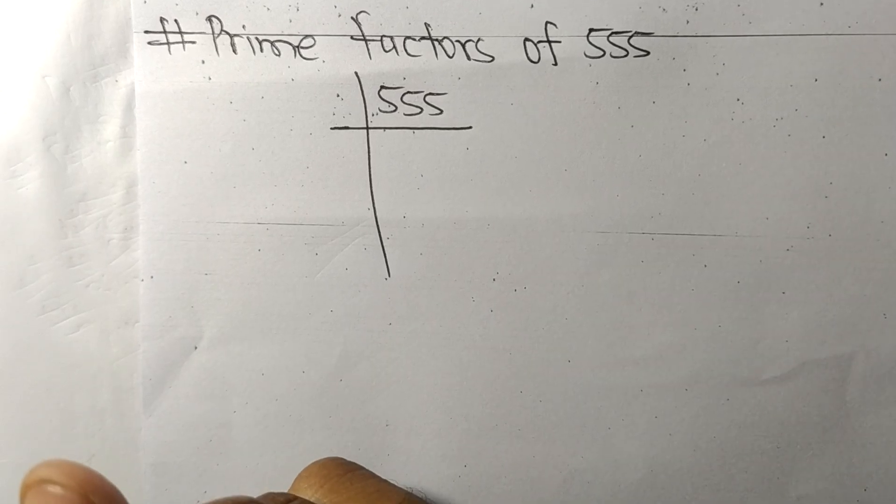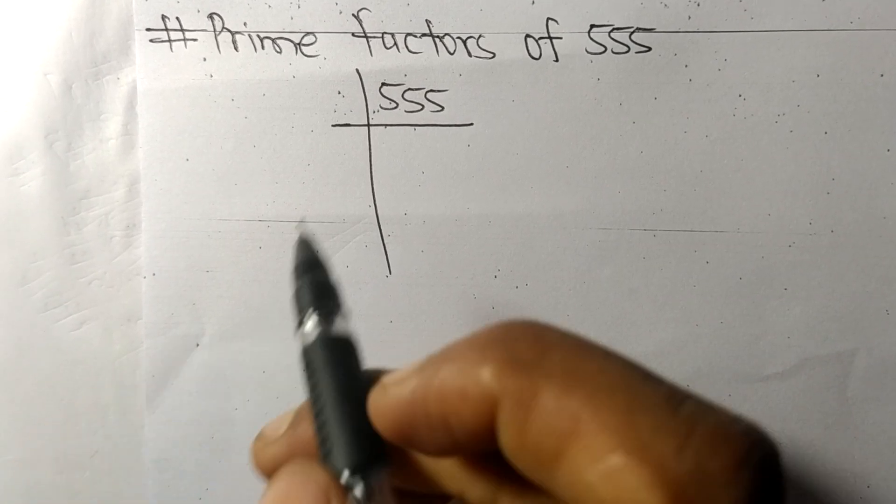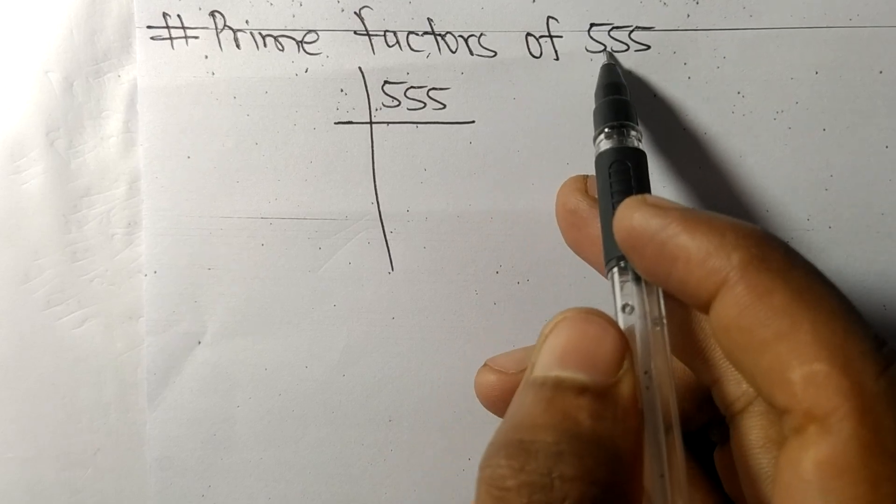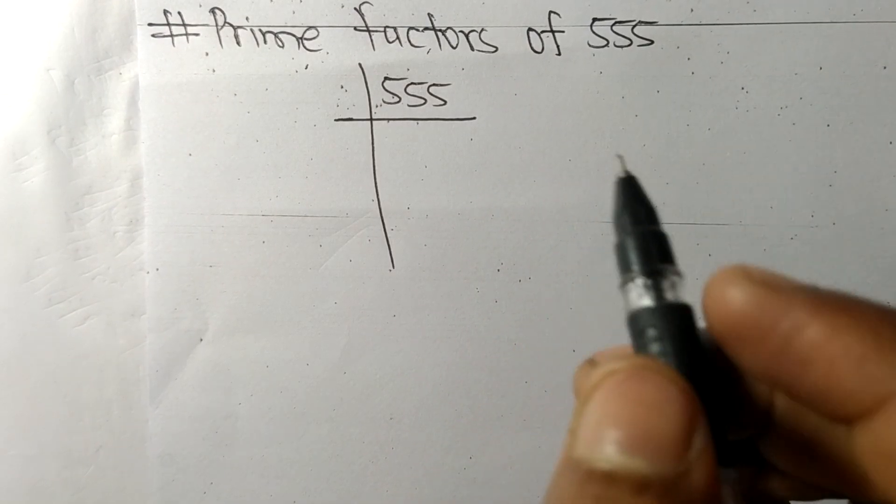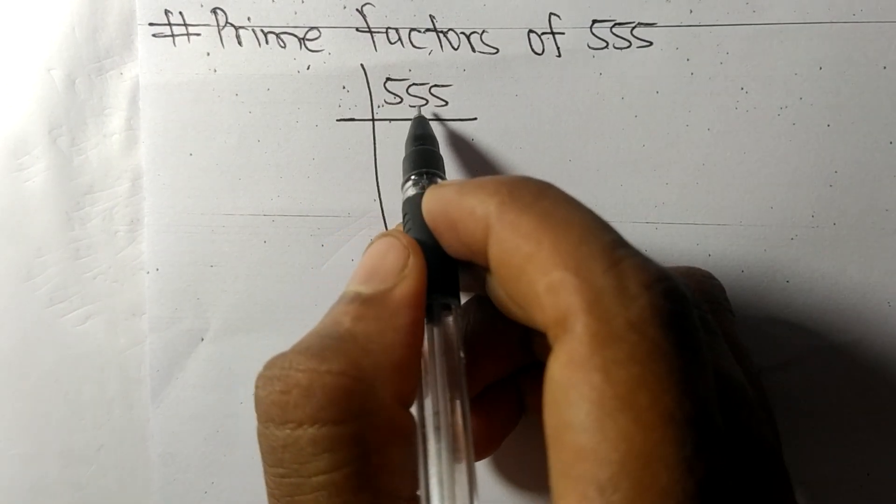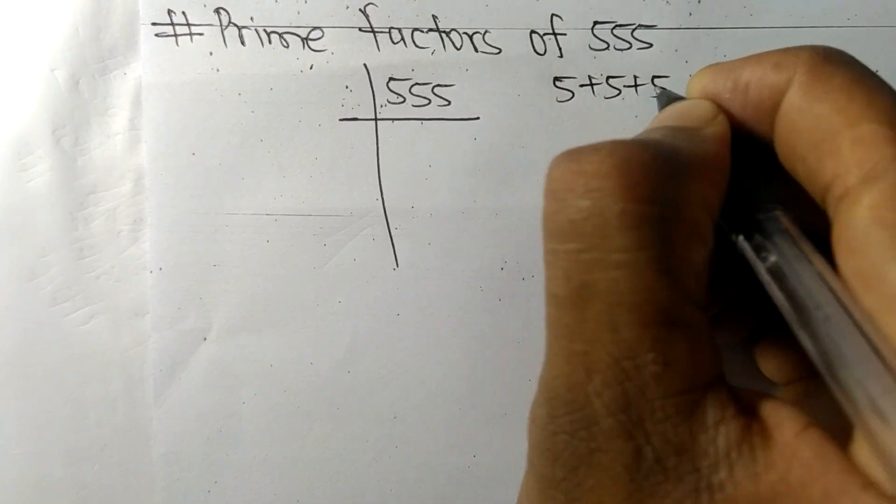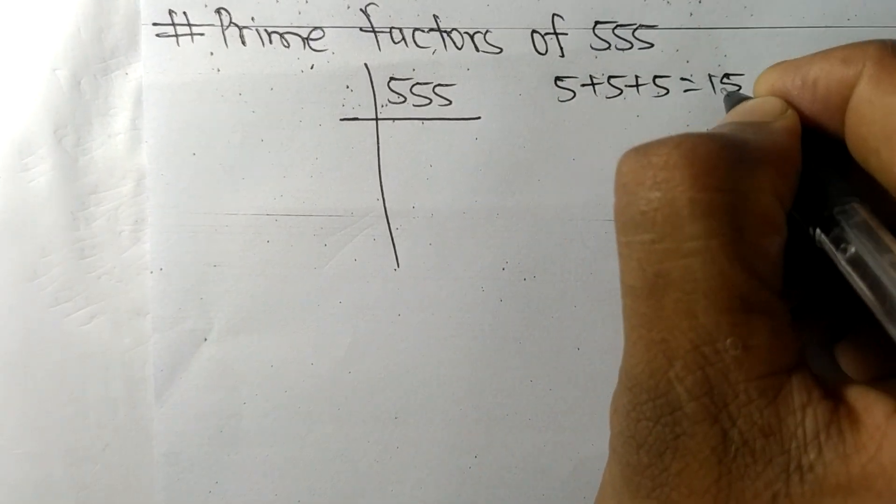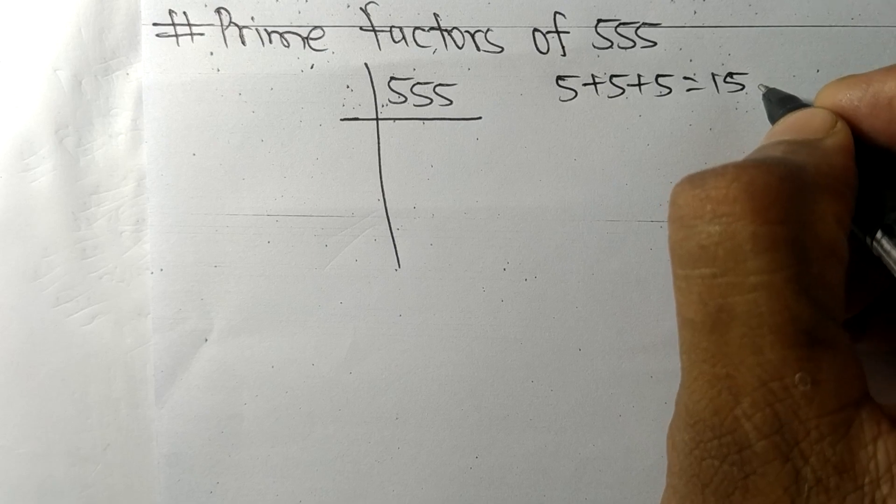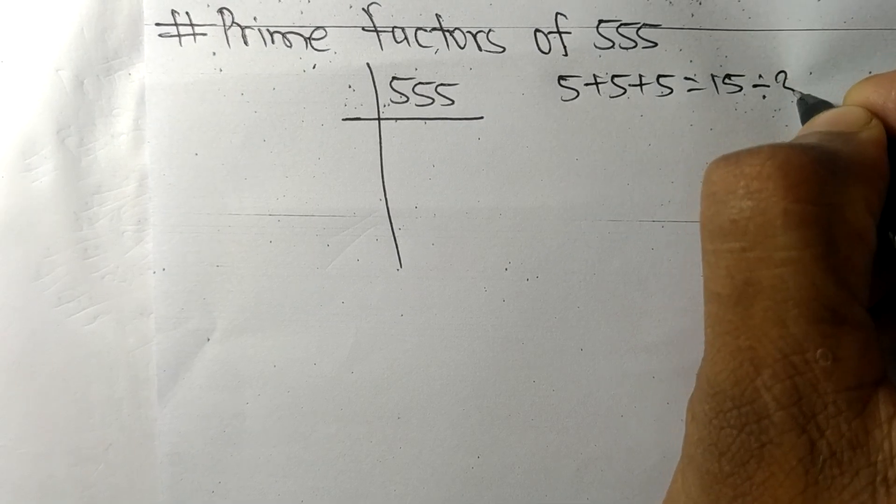Today in this video we shall learn to find the prime factors of 555. When we add all these numbers, 5 plus 5 plus 5, we get 15, and 15 is exactly divisible by 3.